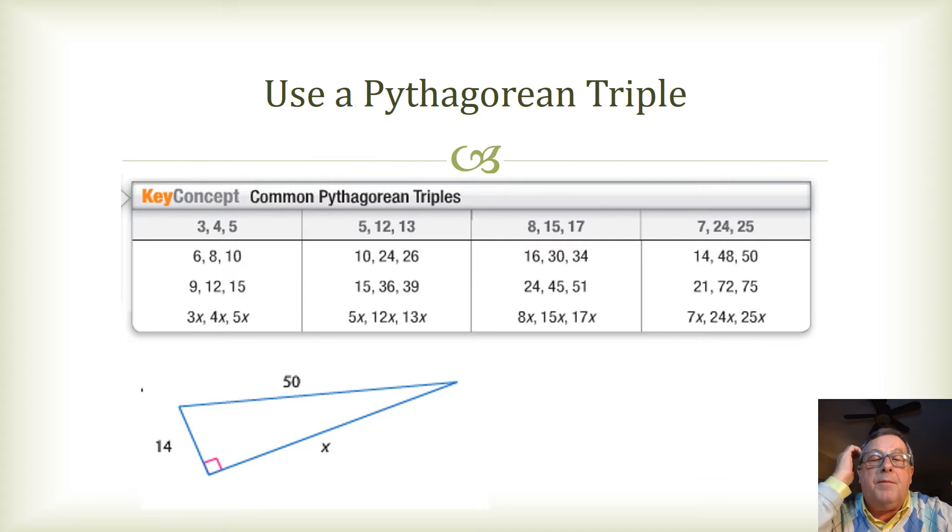So, I got my common Pythagorean triples up here. And I got here, it's 14, and this is 50. We're trying to find the measure of X. 50 is the hypotenuse.